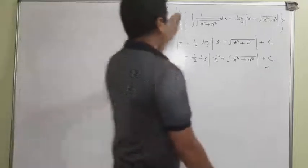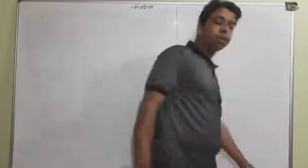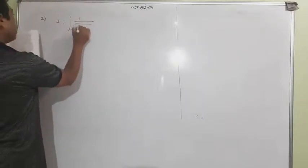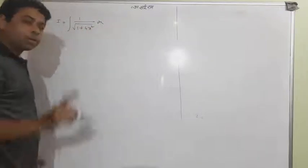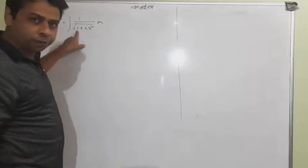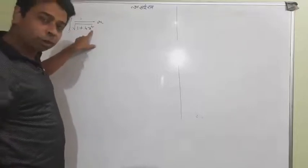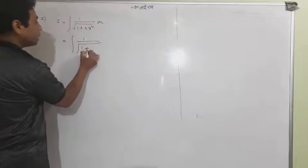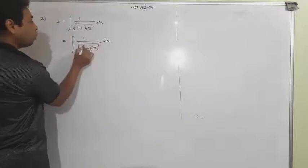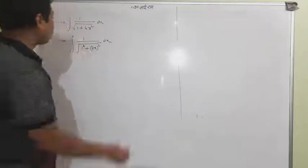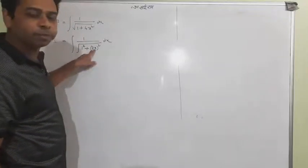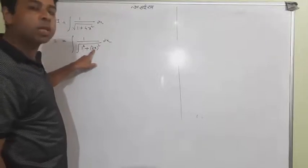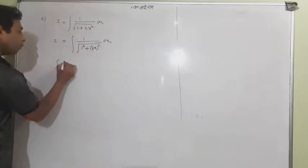Now question number two from the exercise: 1 upon 1 plus 4x squared. It is again 1 upon something — there's a constant, don't worry. But this is not a single x squared; it has a coefficient. Write 4x squared as (2x) squared, and 1 as 1 squared. Now you have 1 upon 1 squared plus (2x) squared — but this is not a linear x; the coefficient of x is important.